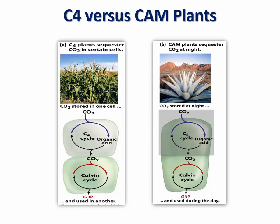Comparing C4 plants to CAM plants, the C4 pathway separates photosynthesis in different cells: CO2 fixation occurs in mesophyll cells by PEP carboxylase, and the Calvin cycle occurs in the bundle sheath cells. Whereas in CAM plants, both CO2 fixation and the Calvin cycle occur in the same cells but are separated temporally — CO2 fixation occurs at night, while the Calvin cycle happens during the day.